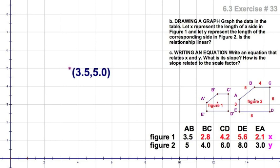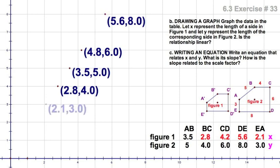Well, let's plot the rest. Let's put in BC, 2.8, 4. CD, 4.2, 6. DE, 5.6, 8. And finally, EA, 2.1, 3.